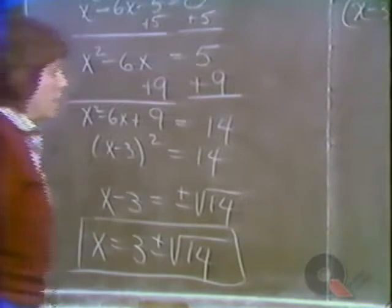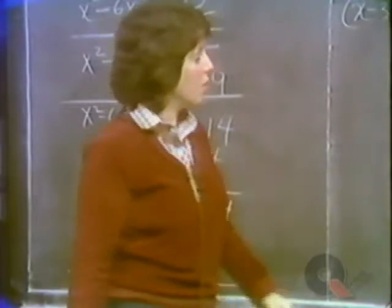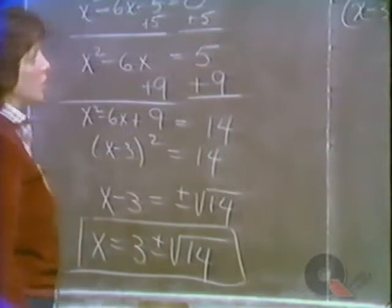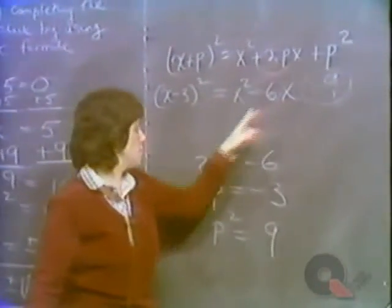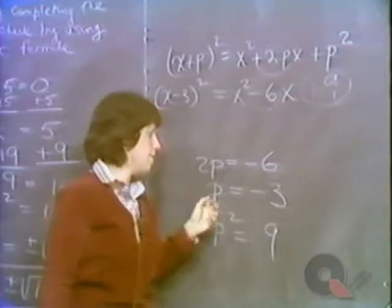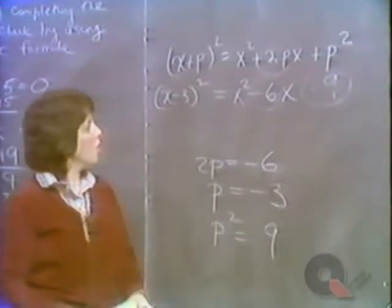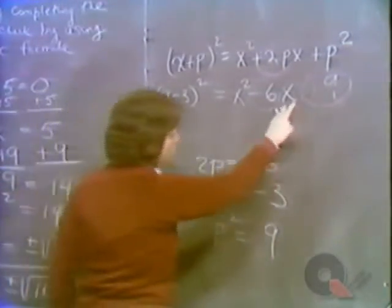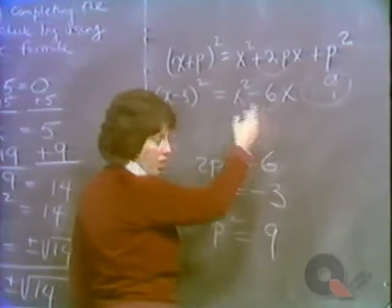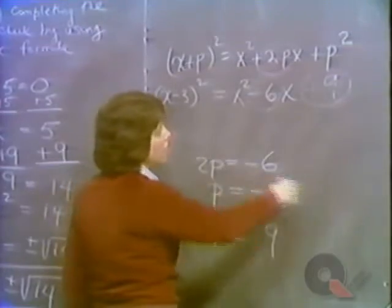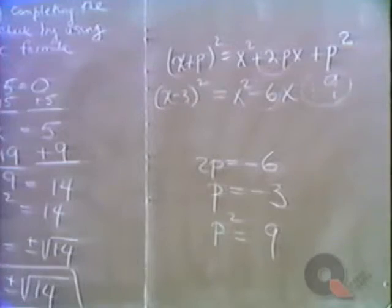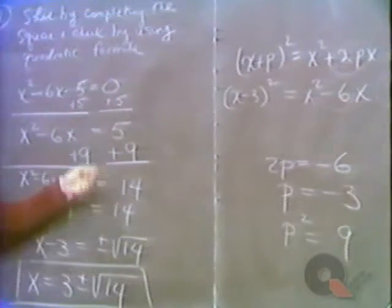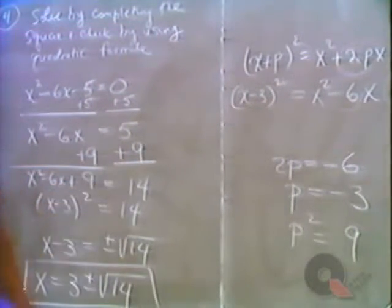To make completing the square more automatic: we analyzed that 2p equals minus 6, took half of that for p, then squared it. In one step: take the coefficient of the first-degree term — here minus 6 — halve it to get minus 3, square it to get 9, and add that to both sides. In short: take half the coefficient of x, square it, and add it to both sides.